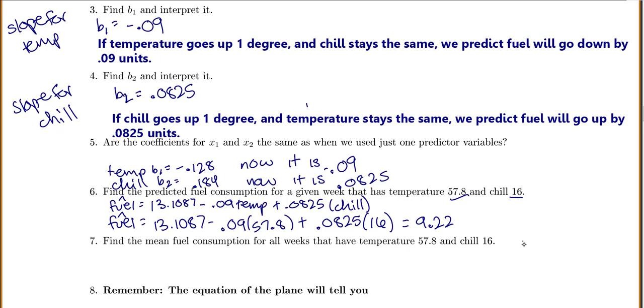Let's try it now. So this said the predicted fuel consumption for one specific week. Part 7 says, find the mean or average for all the weeks that have those same conditions. Notice they are the exact same numbers. We don't have to do anything different. We still just say, well, my predicted fuel is still going to be 9.22. So it doesn't matter if they ask you just find the predicted value for one week or the average for all the weeks, you do the exact same thing.